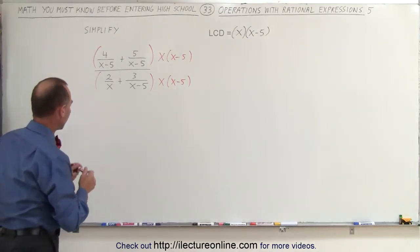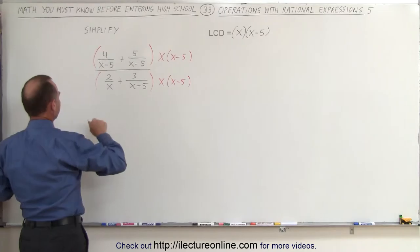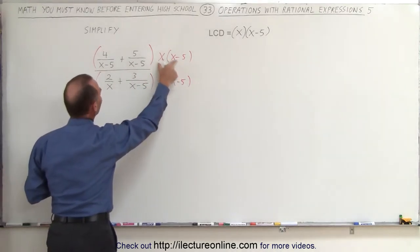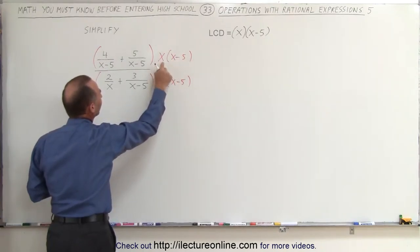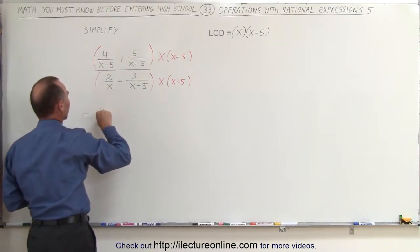Now when we do that, notice we get the following. Here you can see when we multiply this times the first fraction, x minus 5's cancel out, x survives, so we multiply x times 4 to get 4x.